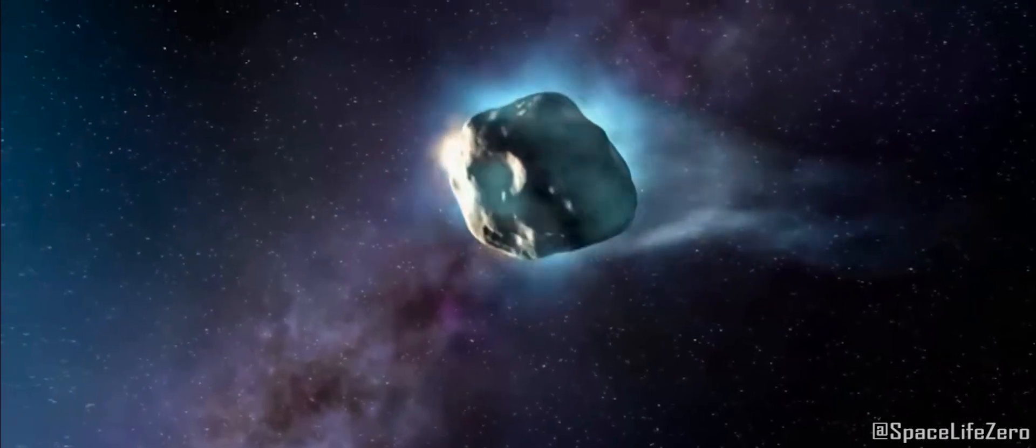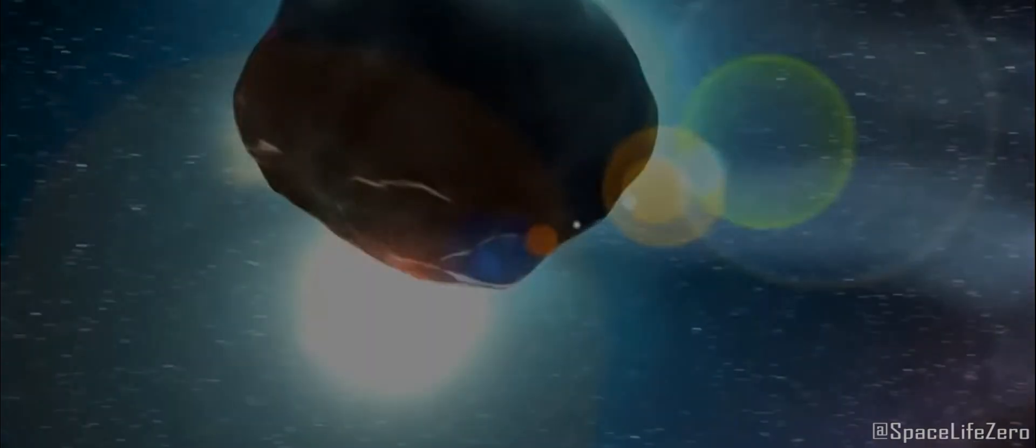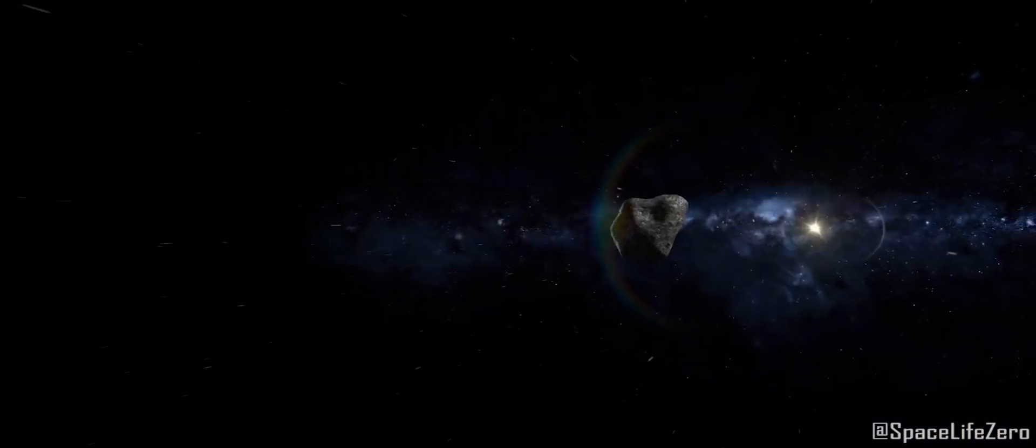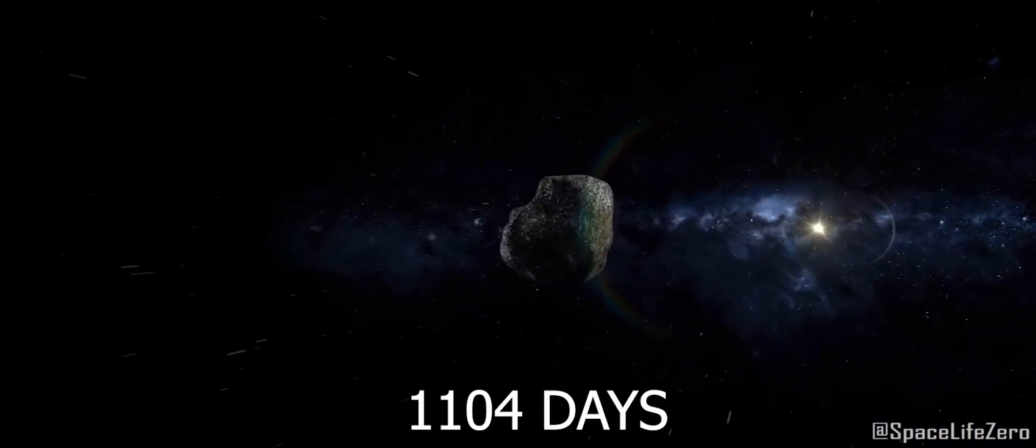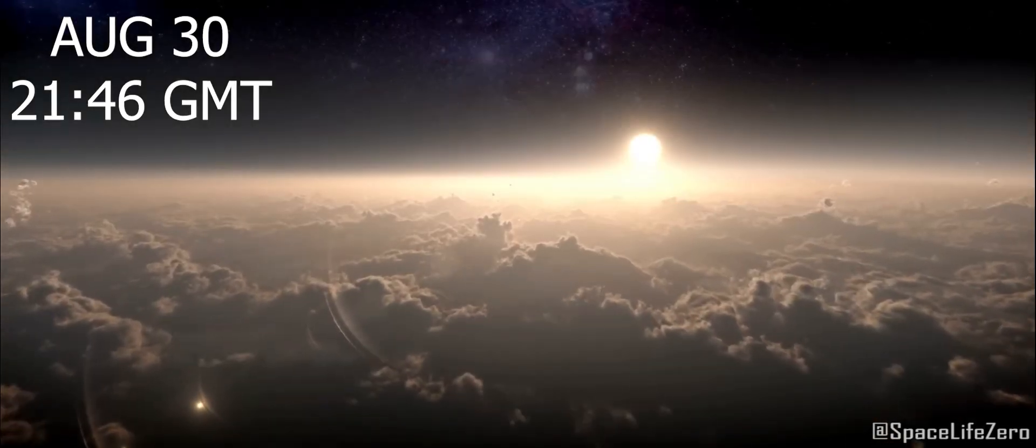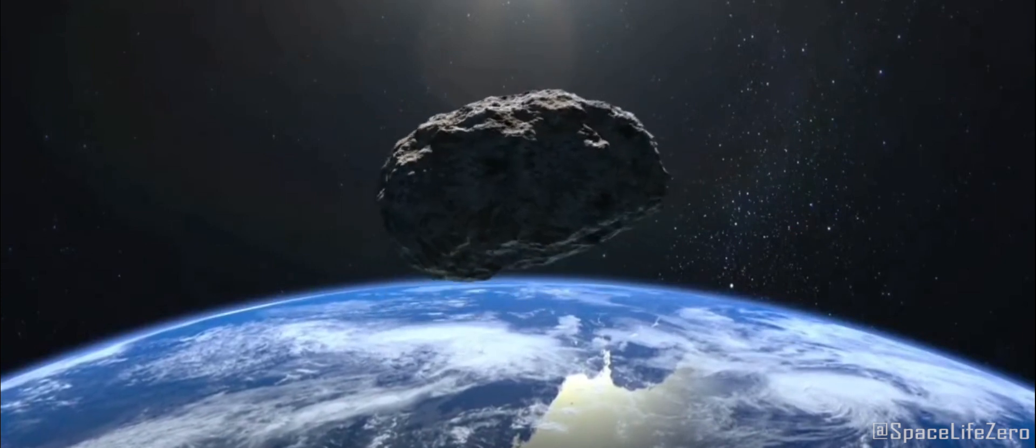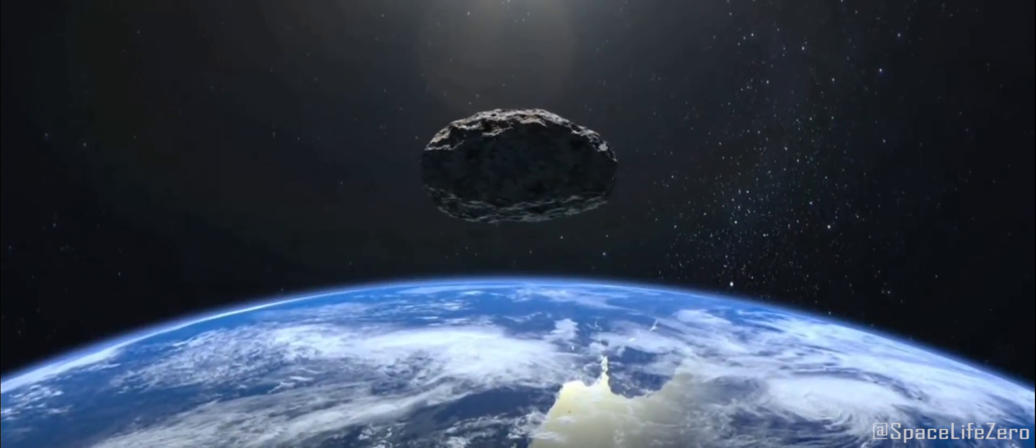This near-Earth object belongs to the Aten group of asteroids. It makes one orbit around the Sun in 1,104 days. On August 30th at 21:46 Greenwich Mean Time, it will pass past Earth at a distance of 6.43 million kilometers and at a speed of 4 kilometers per second.